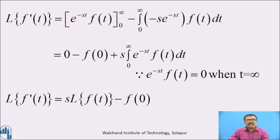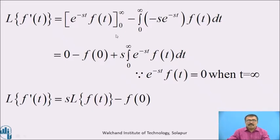L{f'(t)} = [e^(−st) · f(t)] from 0 to infinity minus the integral from 0 to infinity of (derivative of e^(−st)) · f(t) dt, where the derivative of e^(−st) is −s·e^(−st) and the integration of f'(t) is f(t).